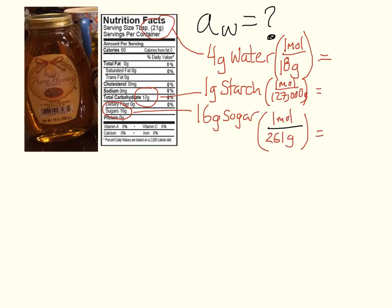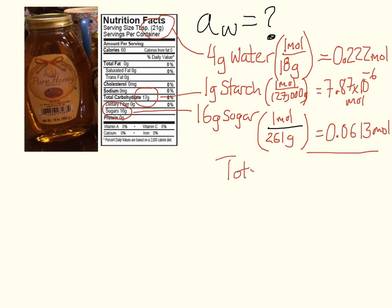Okay, having looked up these numbers, I'm ready to do some calculations of how many moles we have. So pulling out my calculator and working down from the water, I find that we've got 0.222 moles of water. I've got 7.87 times 10 to the minus 6 moles of starch. That's not very much at all. And for the sugar, I've got about 0.0613 moles. And what that means is the total number of moles in a serving of honey comes out to be 0.284, and I'm rounding here, moles.